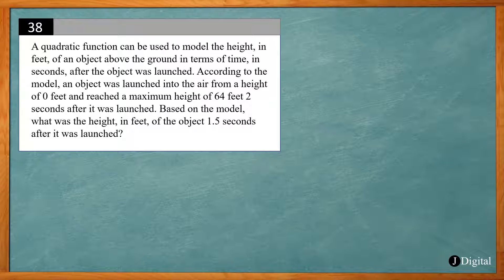This problem says a quadratic function can be used to model the height in feet of an object above the ground in terms of time in seconds after the object was launched. According to the model, an object was launched into air from a height of 0 feet and reached a maximum height of 64 feet 2 seconds after it was launched. Based on the model, what was the height in feet of the object 1.5 seconds after it was launched?